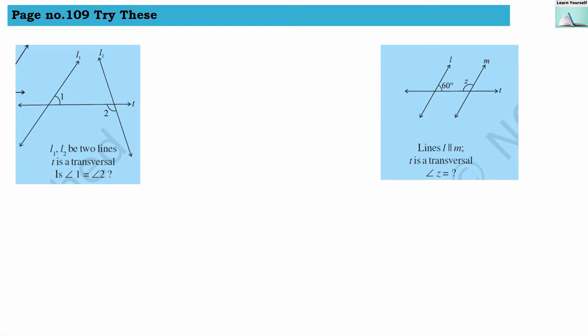Our next question: L1 and L2 be two lines, T is a transversal. Is angle 1 equal to angle 2? Angle 1 will be equal to angle 2 if these two lines are parallel — then these two would have become corresponding angles. However, they have not said that these two lines are parallel, and we can see that they are not parallel. At some point they will intersect with each other, so these two lines are not parallel and that's why angle 1 is not equal to angle 2.